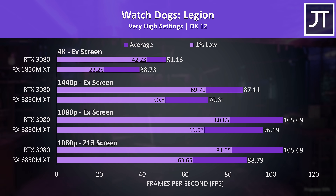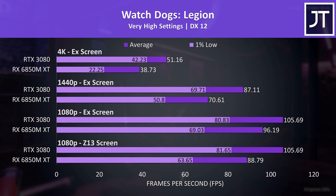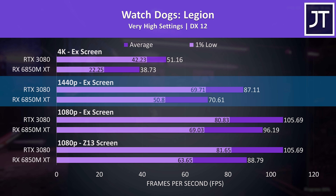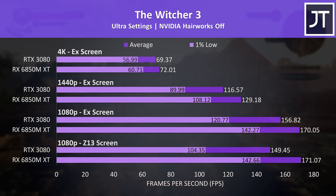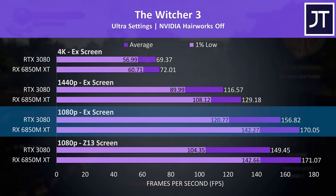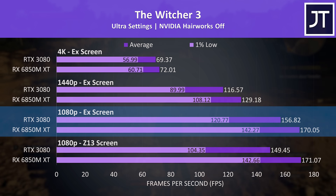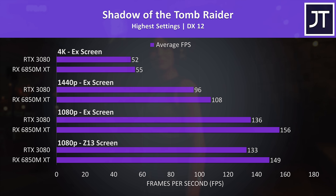Watch Dogs Legion had above average gains with the 3080 — the 1% lows from the 3080 are close to the average FPS of the 6850M XT at 1440p, and then ahead of it at 4K. The Witcher 3 is an older game but still quite popular, and this one was a win for the 6850M XT at all resolutions — at ultra settings 150 FPS with 120 for the 1% low is still going to play very well. Shadow of the Tomb Raider is another older title where the 6850M XT was ahead at all three resolutions.